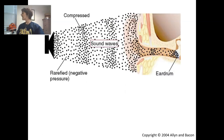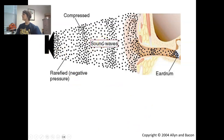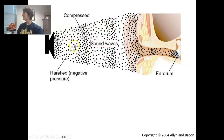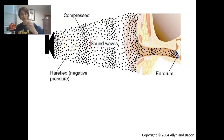Looking at a speaker producing sound, you can see the sound waves have areas of compression where molecules are really close to each other, and areas of expansion or rarefaction of those molecules. We're always going to have these alternating zones.